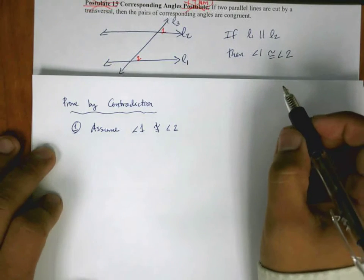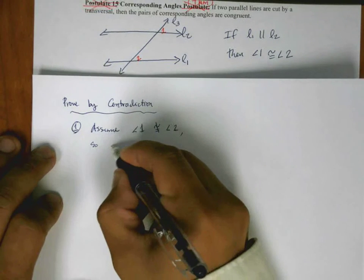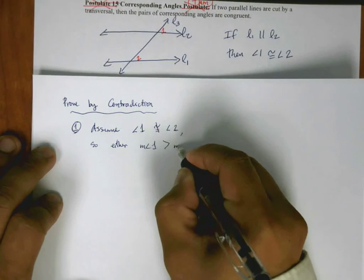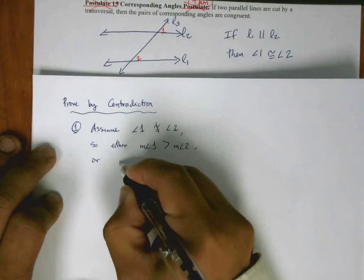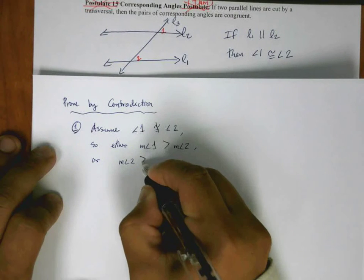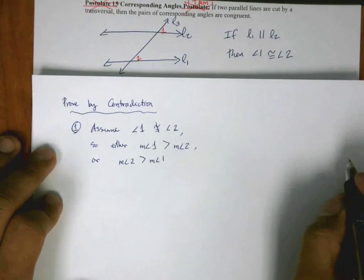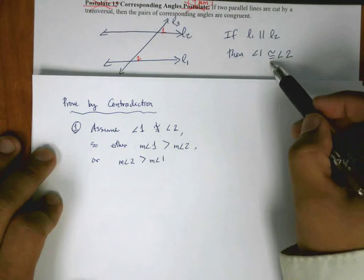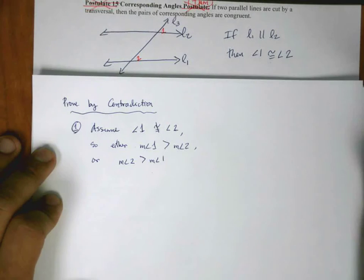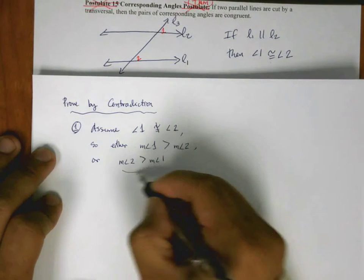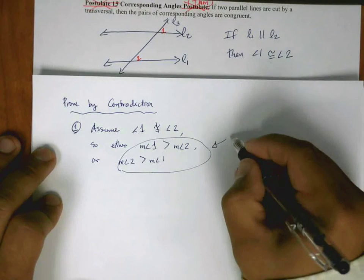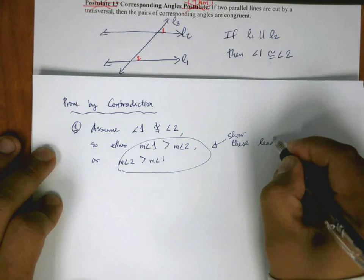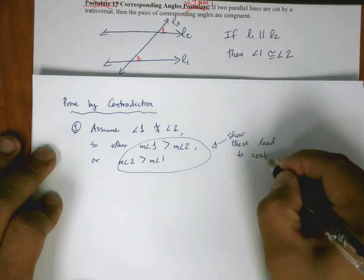Either the measure of angle 1 is bigger than the measure of angle 2, or the measure of angle 2 is bigger than the measure of angle 1. One of these expressions must be true — either they are congruent, or 1 is bigger, or 2 is bigger. Those are the only three possibilities. What we're going to show is that the non-congruent cases lead to a contradiction.